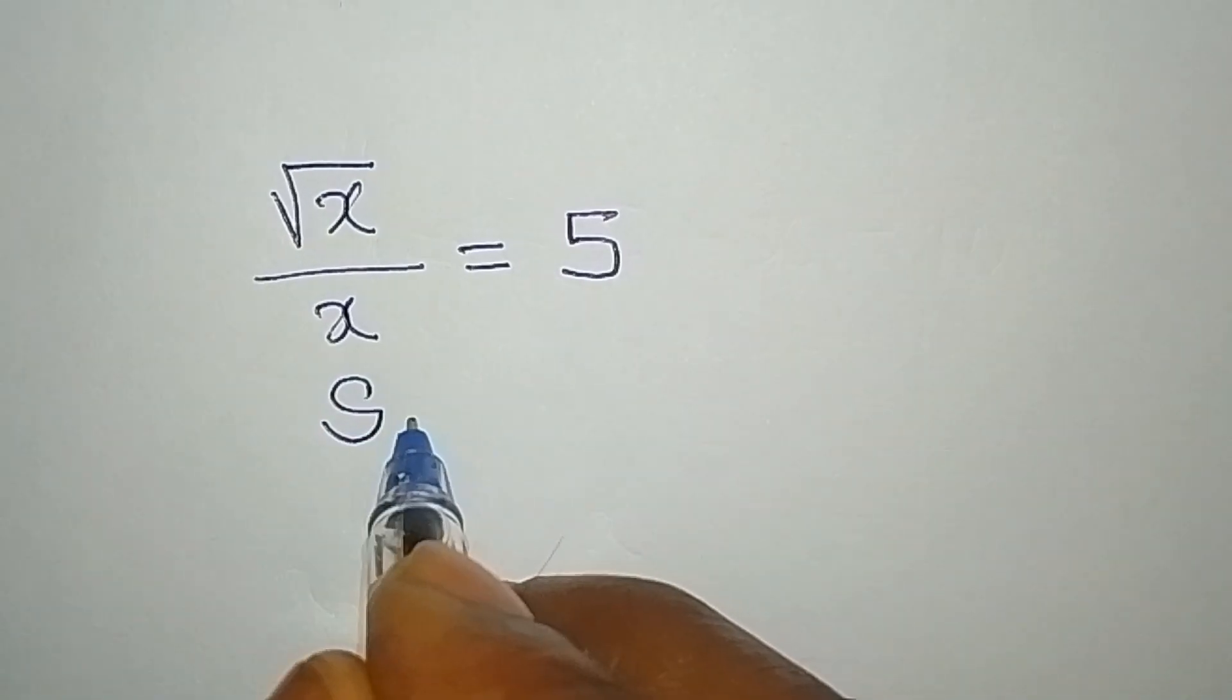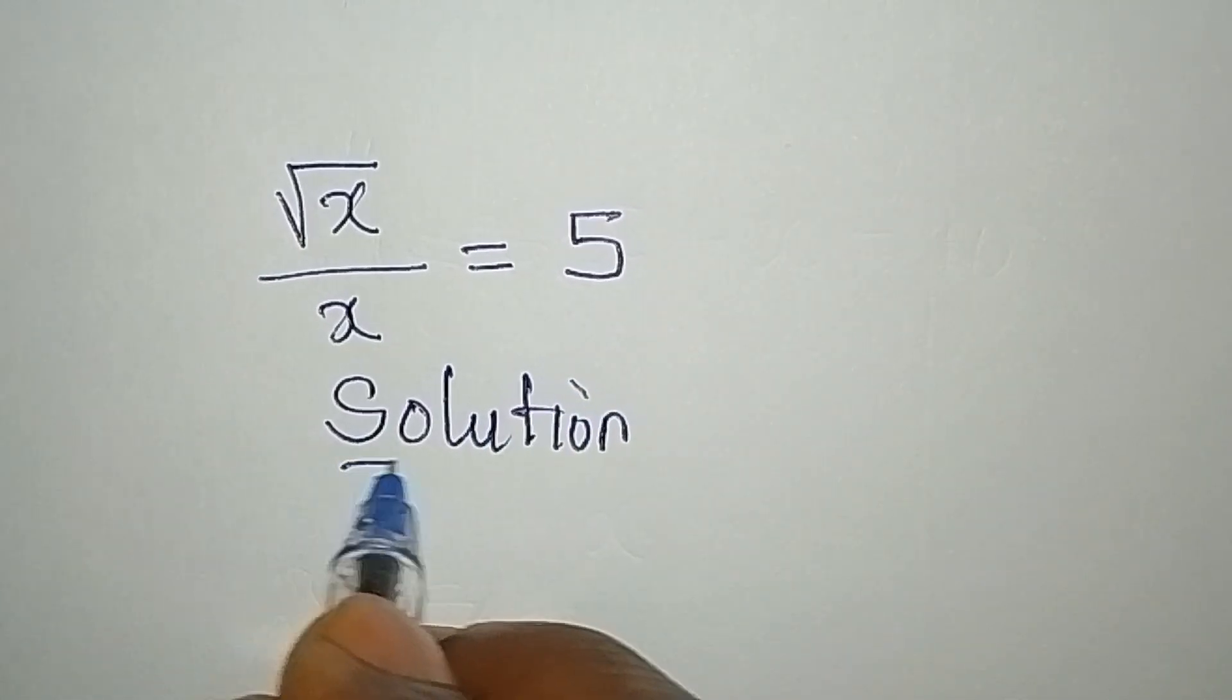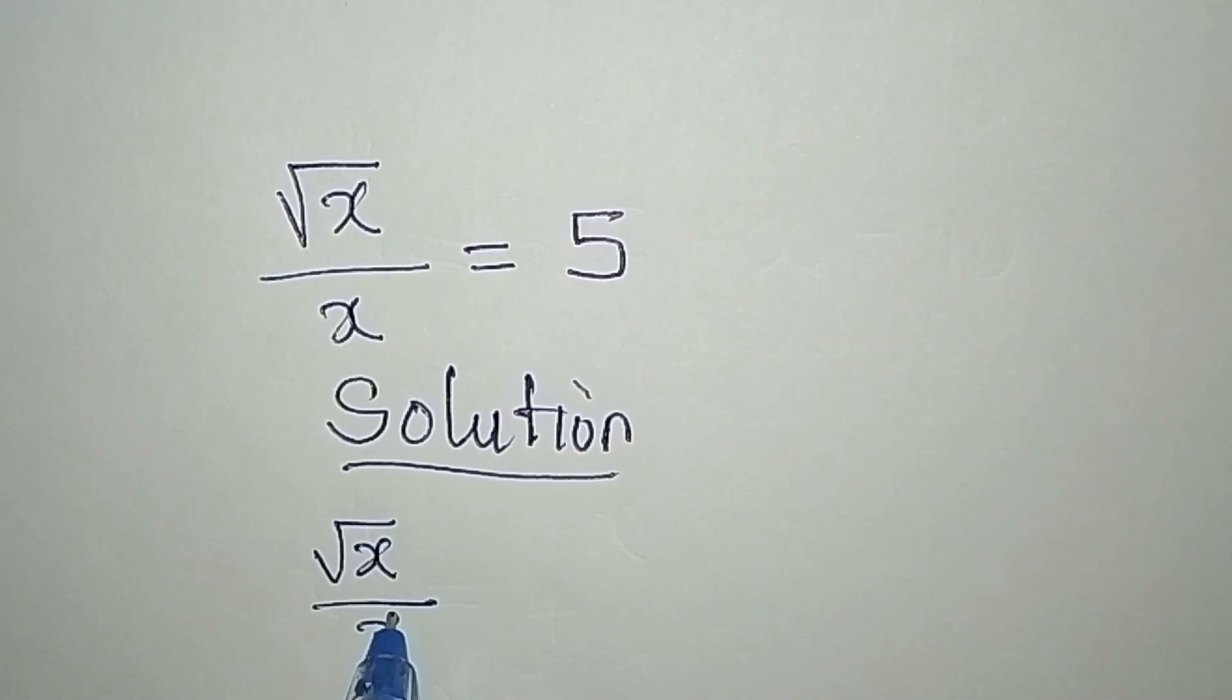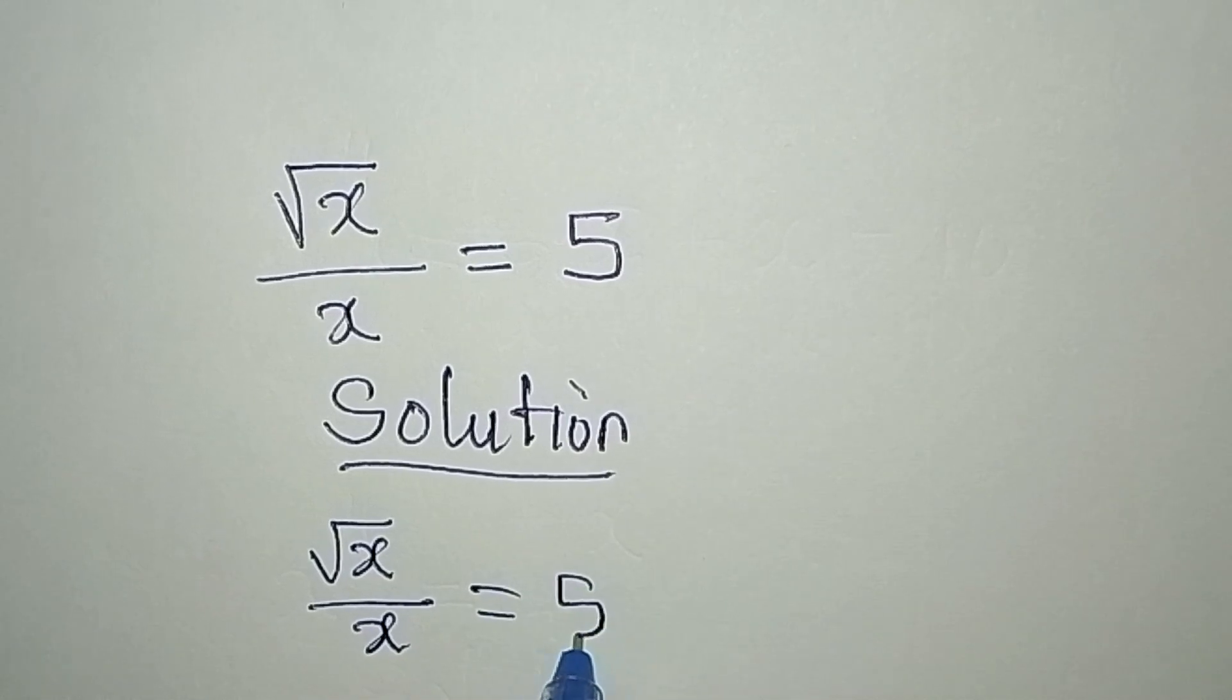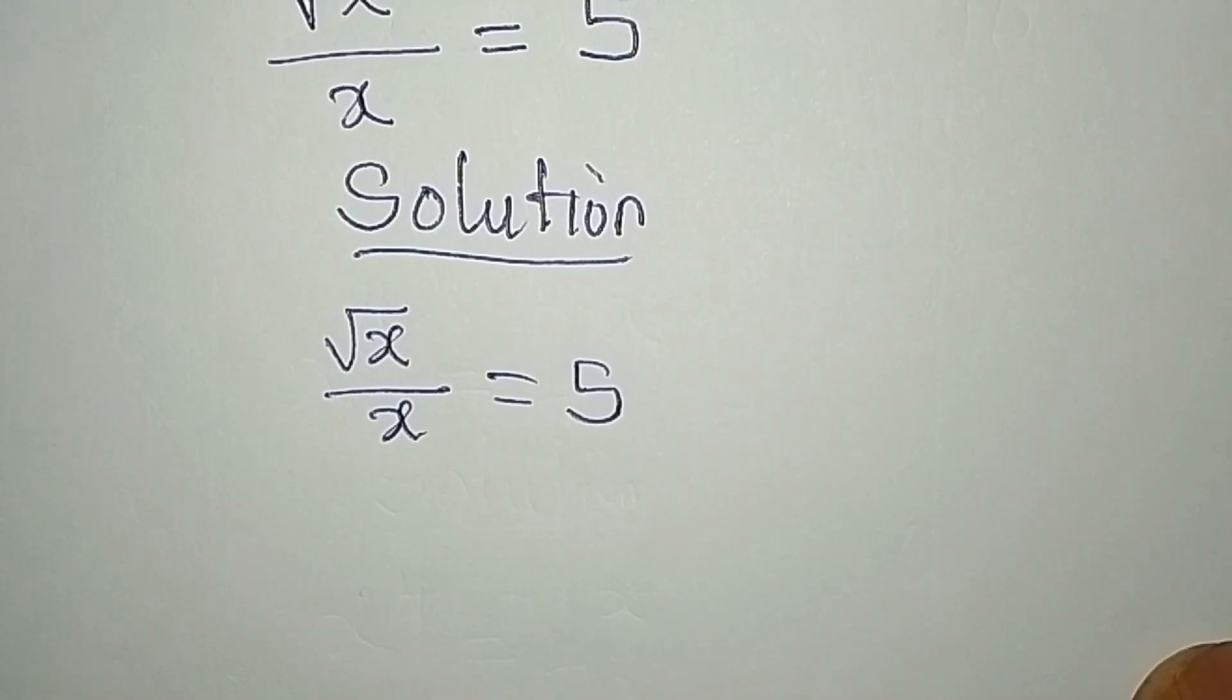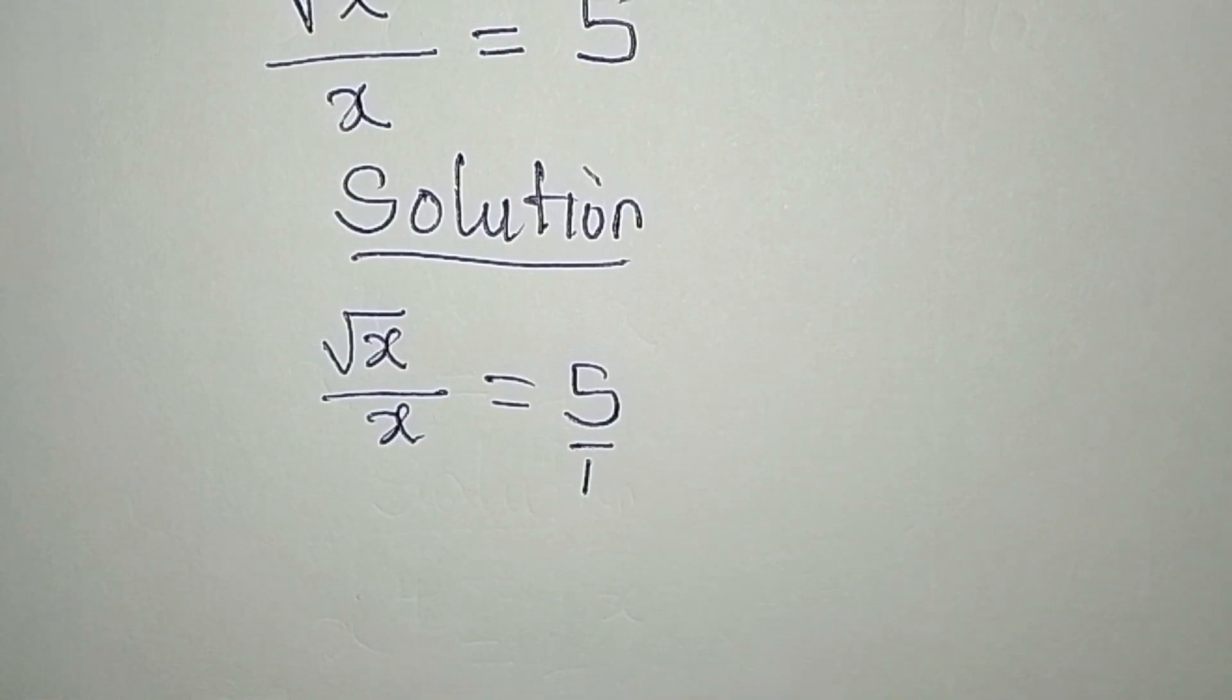Hello everyone, let's look at this problem. Square root of x over x equals 5. Now in this case, what we are going to do is cross multiply, because we believe this is over 1 as well.